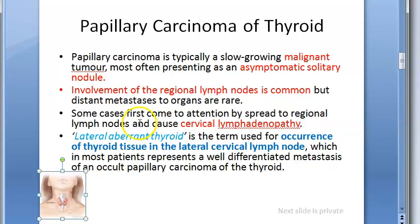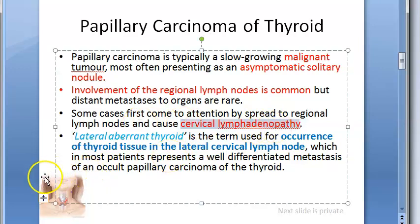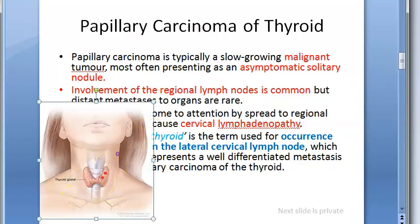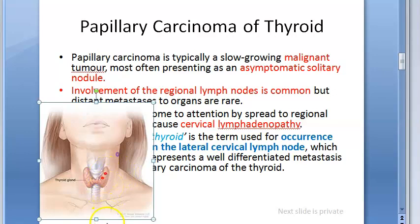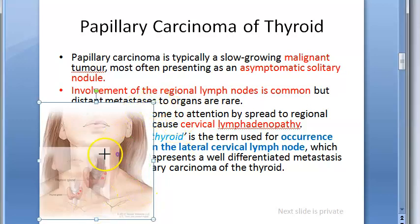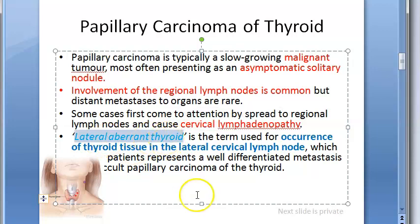There will be cervical lymphadenopathy. Sometimes the thyroid tissue itself can be present in the lateral cervical lymph node — this is called lateral aberrant thyroid, meaning thyroid tissue found within the lateral cervical lymph node.